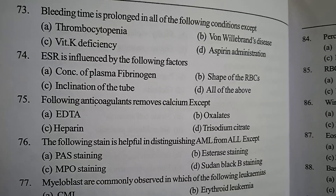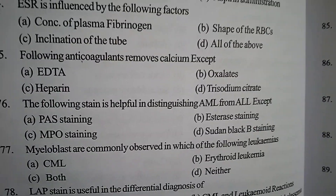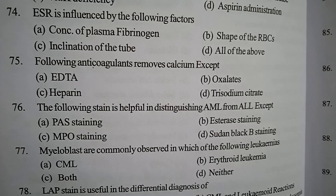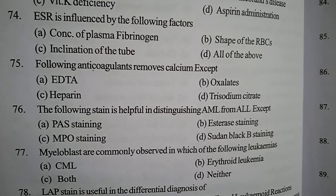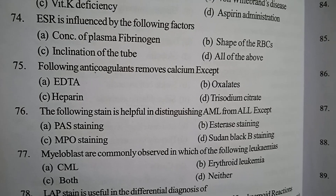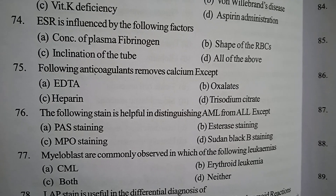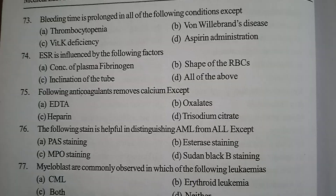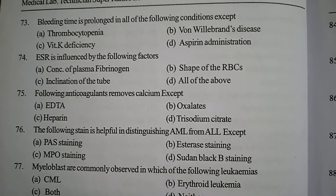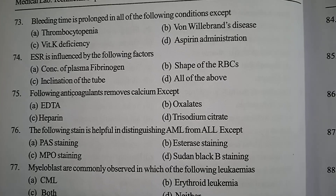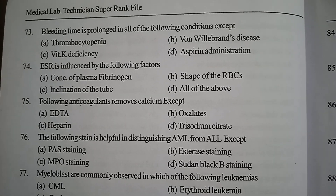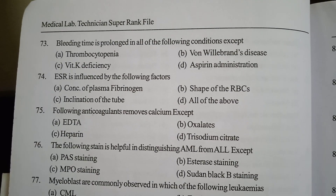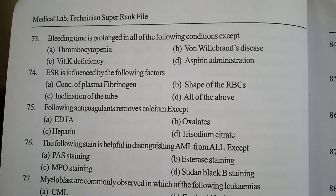Next one: which of the following anticoagulants removes calcium except? Option A: EDTA (ethylene diamine tetra-acetic acid). Option B: oxalates. Option C: heparin. Option D: trisodium citrate. Correct answer: option C, heparin. The other three all remove calcium, but heparin acts as an antithrombin — it inhibits the action of thrombin on fibrinogen and also the formation of thromboplastin, inhibiting the activity of these enzymes.